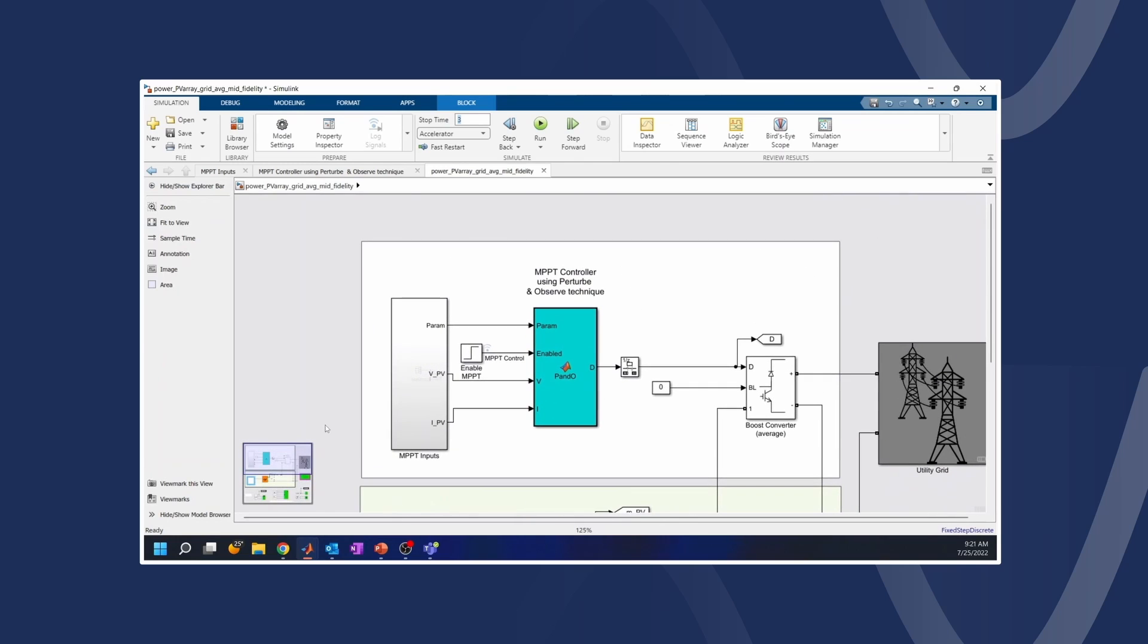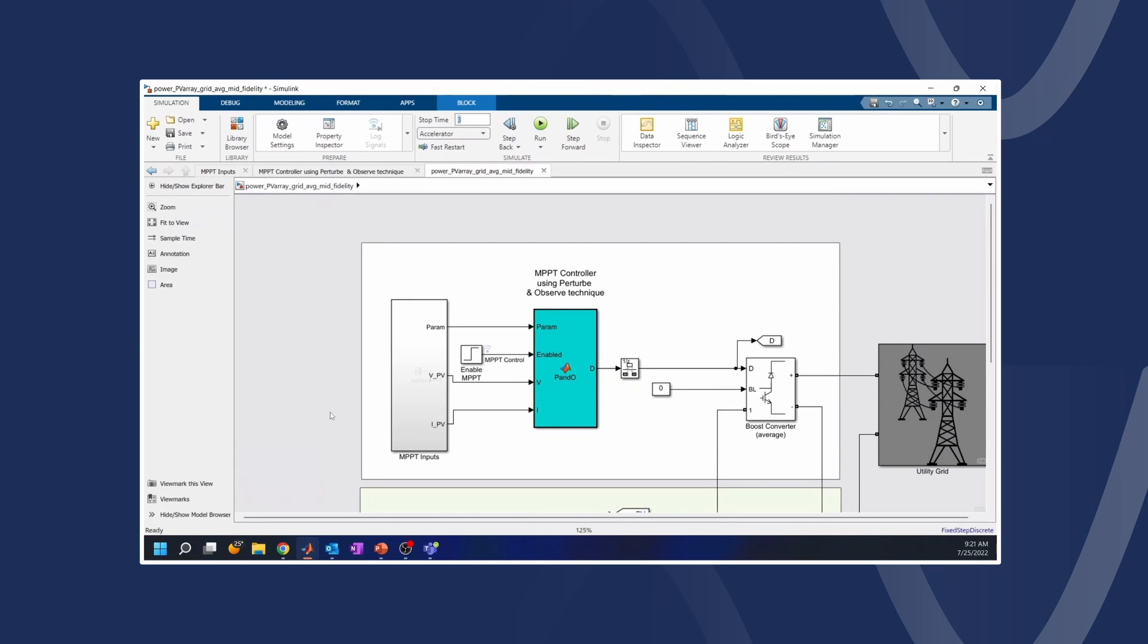Now, let us explore the boost converter and the MPPT controller in more details. We are using an average model boost converter, and we are using the MPPT to control the duty cycle. The control algorithm is implemented using a MATLAB function block, and it is reacting to the input parameters, which are the PV voltage and current, and some additional parameters for the duty cycle. We are enabling the MPPT control after 0.3 seconds, and we are using a step block for this. You can see that now, next to our PV array system, we have a control algorithm that we are using to maximize the power output of the system. So we are modeling deeper details of the components, and now we have a medium fidelity model.